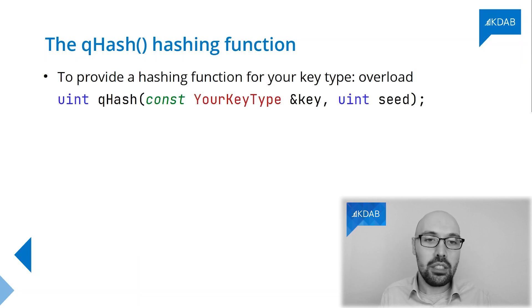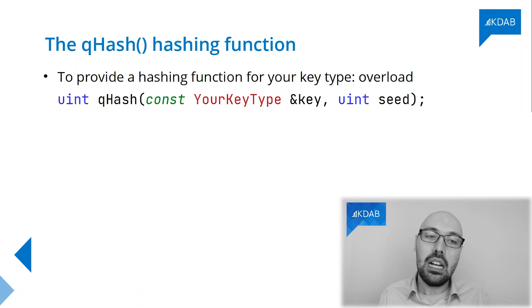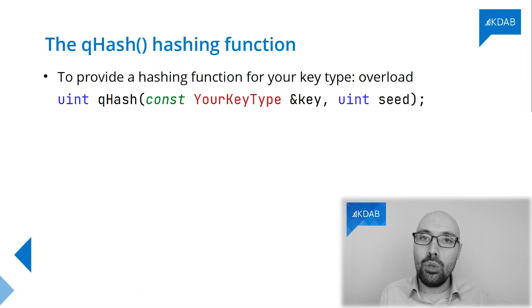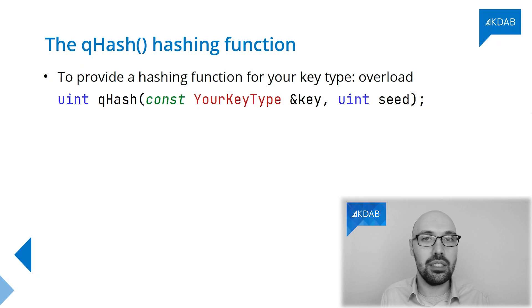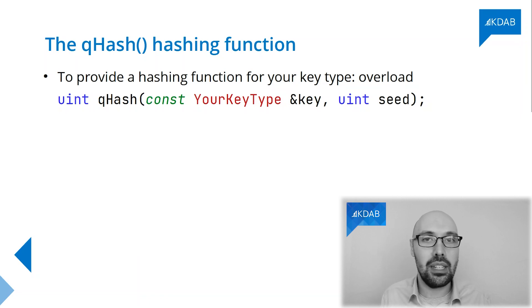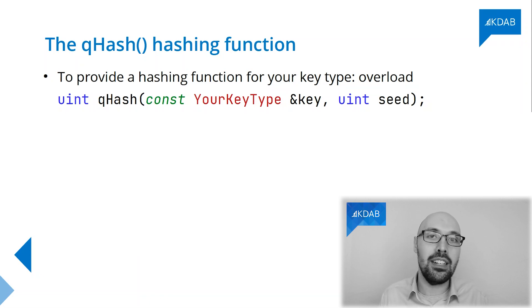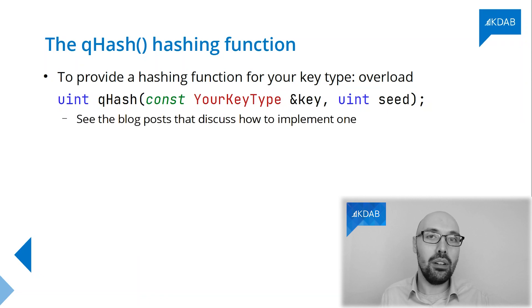What you need to do to provide such a hashing function is to create a function with this signature: a qhash passing your custom key type as the first argument, returning uint, and also taking an extra parameter called a seed as a uint. Typically we don't invent brand new hashing functions all the time — we use pre-existing hashing functions and combine them in clever ways to hash our own key type. So say your key type is the combination of a string like a name and a date of birth — all we do inside such a hashing function is combine the respective hashes for the string, the date of birth, and so on. I'll leave a couple of links in the video description about how to actually implement such a hashing function.